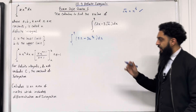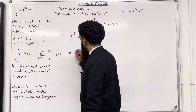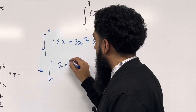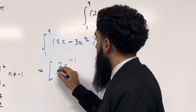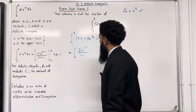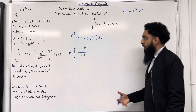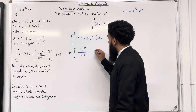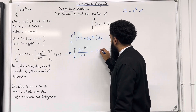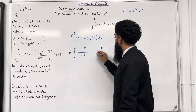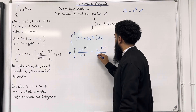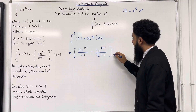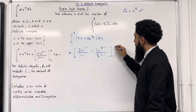Let's start off with the first term. Equal, open square bracket, 2x to the power 1 plus 1, divide by 1 plus 1. Now I'm going to integrate the second term: minus 3x to the power 1 half plus 1, divide by 1 half plus 1. Close square bracket, taking limits from 1 to 9.